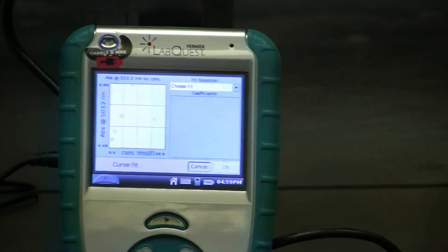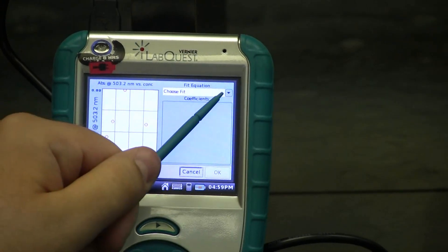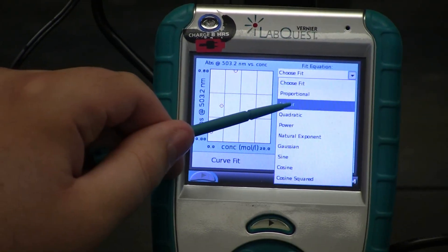Next, click on the Fit Equation drop-down menu and tap on Linear.